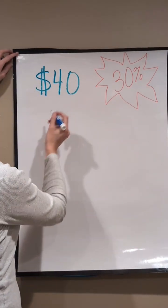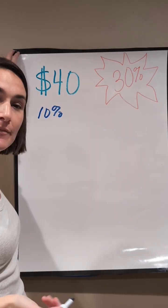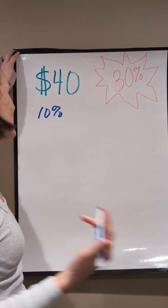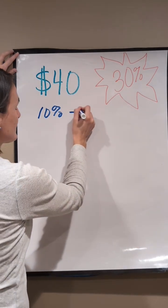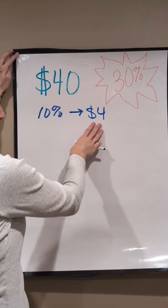So when I think about $40, I know that I can quickly find 10% off of $40. That feels comfortable to me. I know that 10% off of $40 is $4. So if something was 10% off, I would save $4.